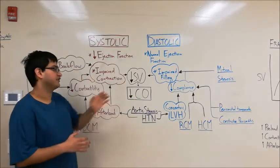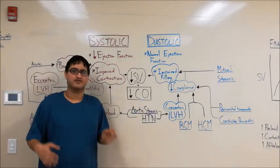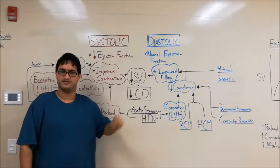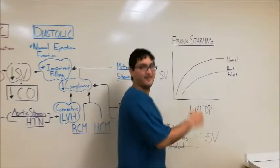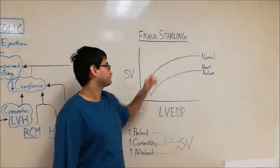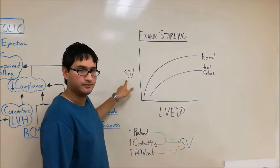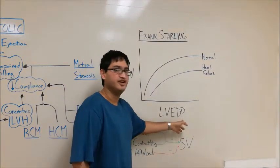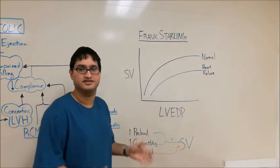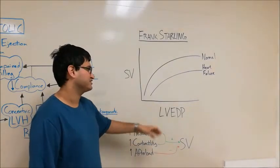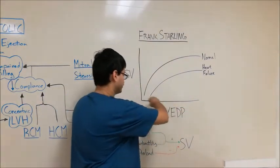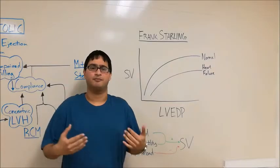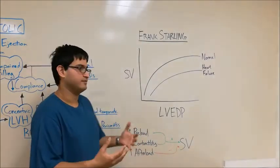Before getting into the details of diastolic and systolic, it's important to review the Frank-Starling relationship, as that relates the filling of the ventricle to the stroke volume. On the y-axis we have stroke volume, and on the x-axis we have the left ventricular end-diastolic pressure — think of it as the amount of filling you get in the ventricle. The basic idea is that as you get more filling, stroke volume goes up. If you fill the ventricle with more blood, the heart is going to pump out more blood — that's fairly intuitive.